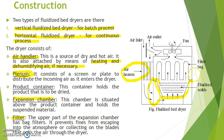The next part is the expansion chamber, situated just above the product container, which holds the suspended material. The last part is the filter bags. The upper part of the expansion chamber has bag filters, which prevent fines from escaping into the atmosphere or collecting on the blades that pull air through the dryer. On the top, a fan is also fixed which removes the moist air from the dryer.